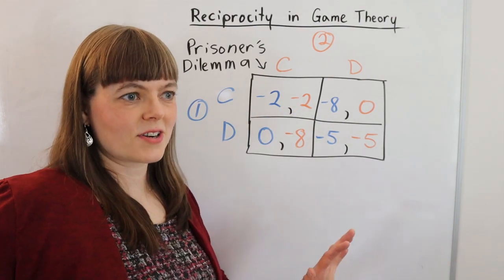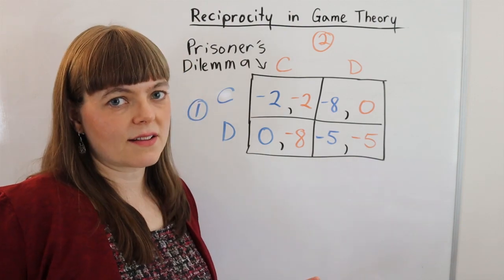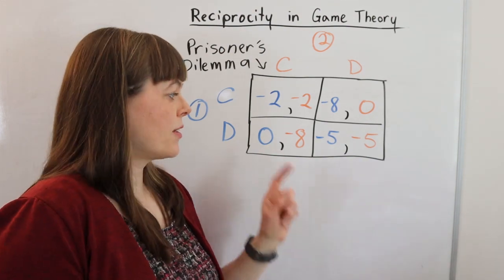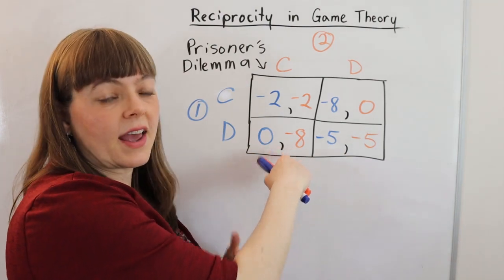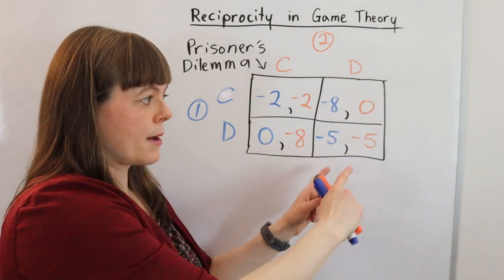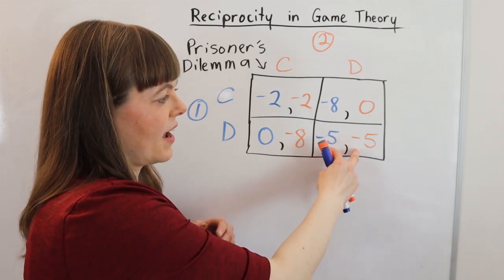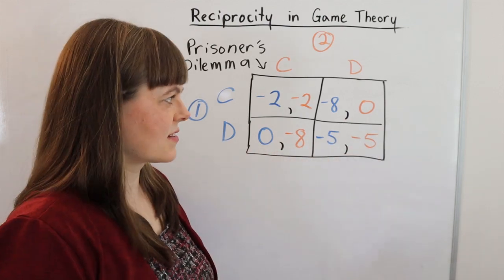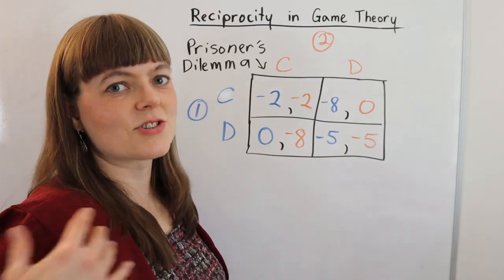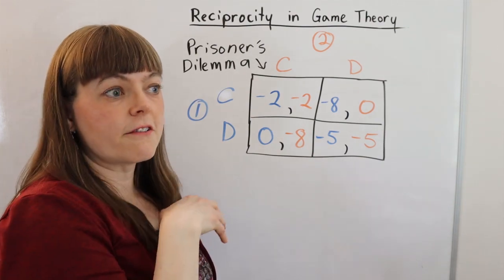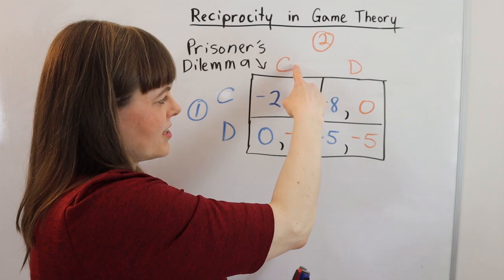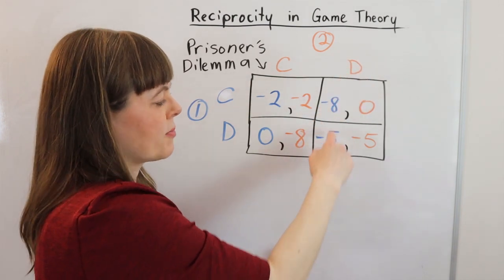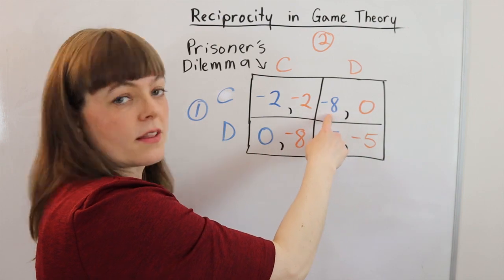The police separate the two friends into different interrogation rooms and give them both the same deal: if you tell on your partner and reveal the bigger crime, we will let you off scot-free and your partner will get a heavier sentence. However, if both of them tell on their partner, they both get a heavier sentence — but not quite as heavy as if one told on their partner while the other stayed quiet. If your partner stayed quiet, you'd wish you had defected and gotten no jail time. If your partner defects, you'd wish you had defected so you're not the one screwed over.